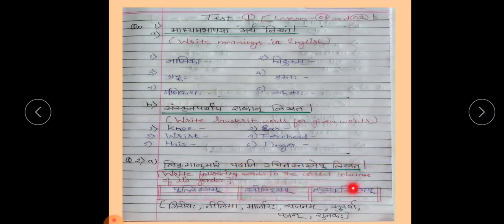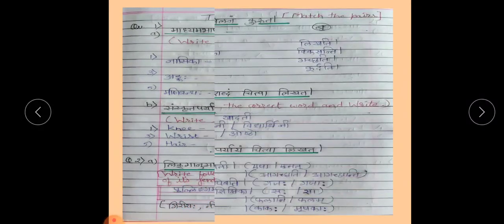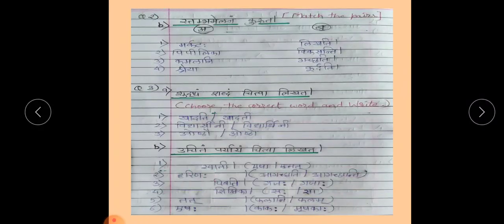Pullingam, Strilingam, and Napunsakalingam columns are given. You have to bifurcate these words into these columns. Next question is Stambha Melanam Kuruta, that means match the pairs — you have to match the noun with the proper verb for it.